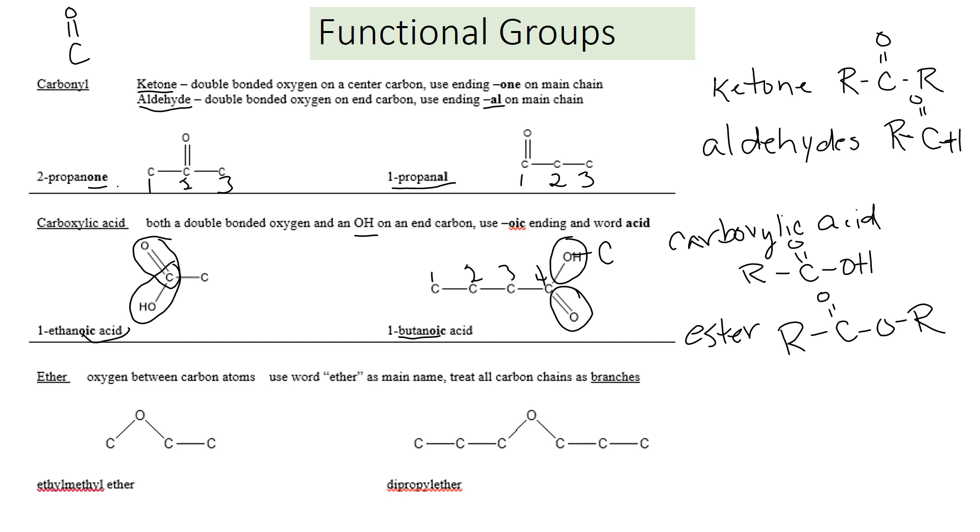Our last group is ether. Ether is when your carbon chain is interrupted by an oxygen. You have an oxygen between carbons. The word ether is used as the main name, and the carbon chains are treated like branches. In this example, we have a one carbon and a two carbons. We call it ethyl methyl ether.